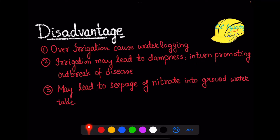There are certain disadvantages as well. As discussed in the graph, if we provide higher than the optimum water quantity, it will decrease the yield of the crop. If we over-irrigate our field or crop, it may lead to the phenomenon called waterlogging. Over-irrigation may lead to dampness which will promote the outbreak of diseases and provide an environment for insects to grow. Too much irrigation also leads to seepage of nitrates into the groundwater table, contaminating it and disrupting the natural ecology of the area.